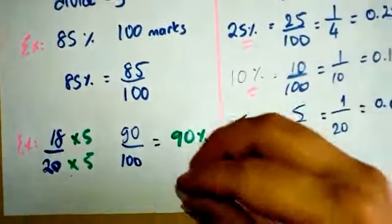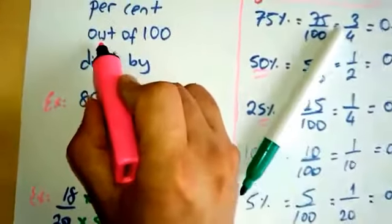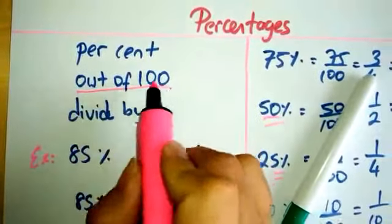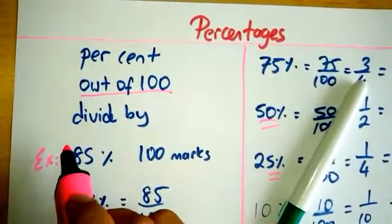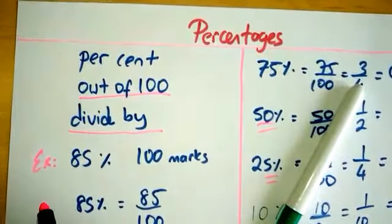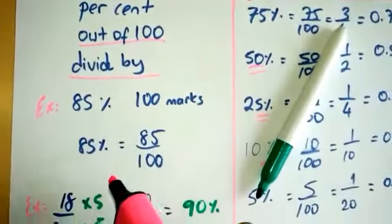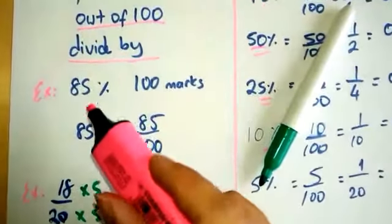The key point: percentage means out of 100, which means divide by 100. To change a fraction to a percentage, you need to divide the numerator by the denominator and multiply by 100.